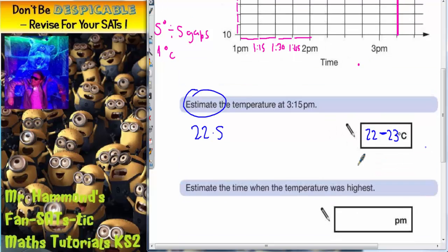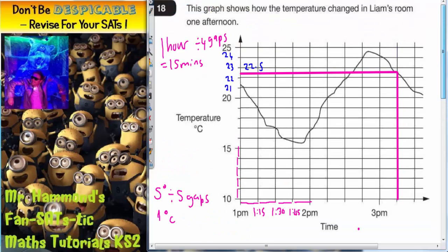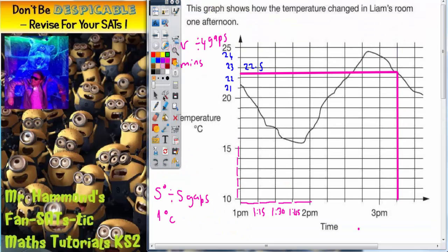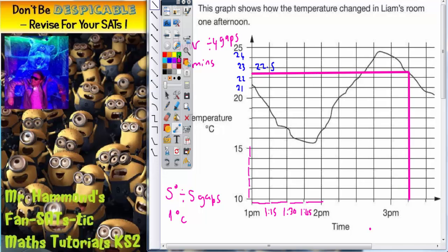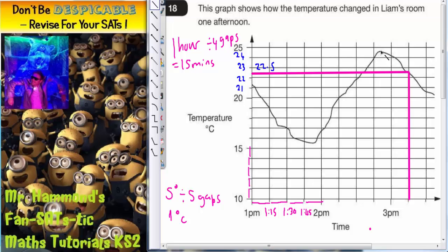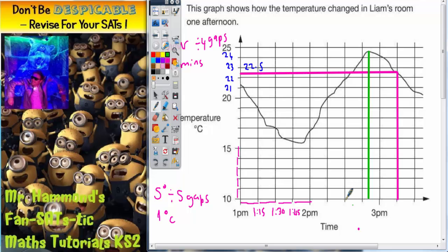The second part of the question: estimate the time when the temperature was highest. Well, if we get a straight line again, this time we'll do it in green. So when the temperature was highest, that's when it's at the top of the graph. Here's the temperature going up, up, up, up, right at the top of the graph. That's when it's highest. So all we need to do is draw a line down from when it's highest, and see if we can try and use that line to estimate the time when the temperature was at the highest.